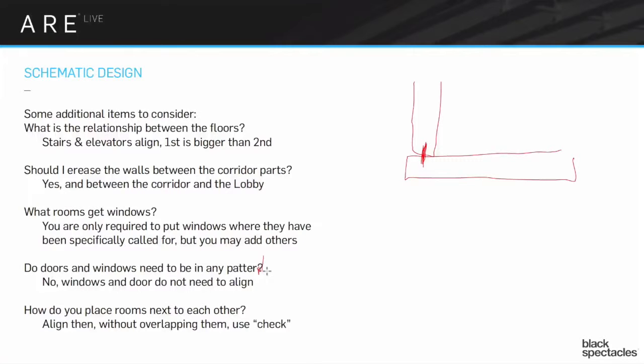We have a couple of questions here. Let's see. We have a question from Diana is asking, do stair dimensions matter? As in, do we need to approximate the amount of risers, rise and run, minimum stair widths. And then secondly, from Jonathan, can you put windows on the interior when the program asks for a visual connection between rooms?